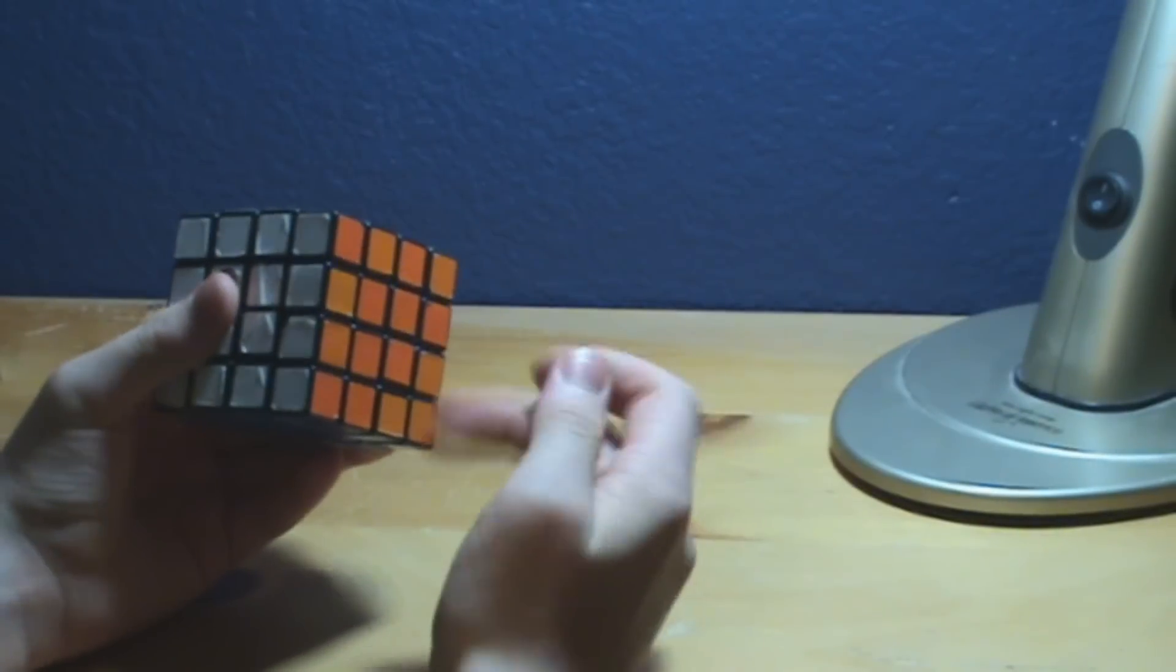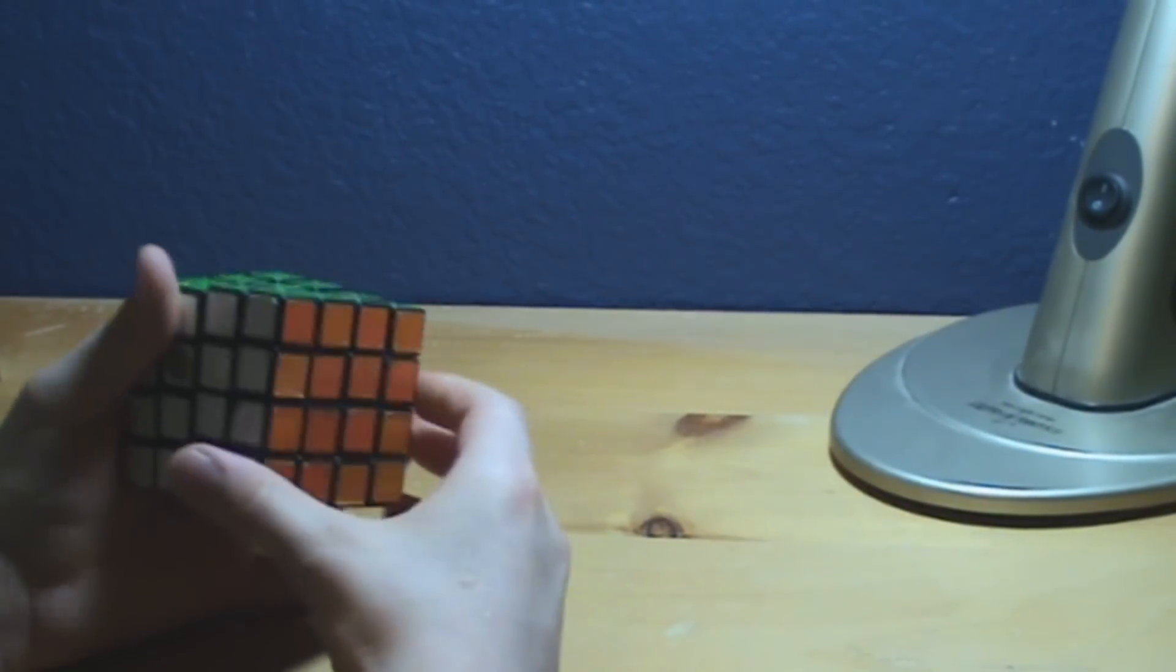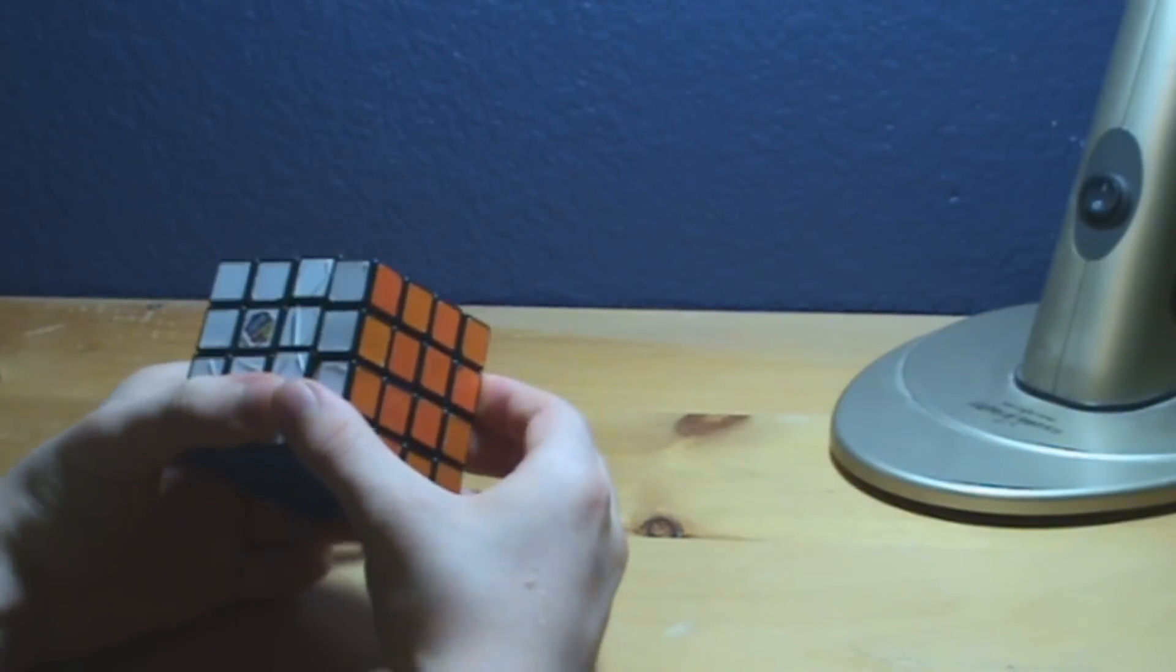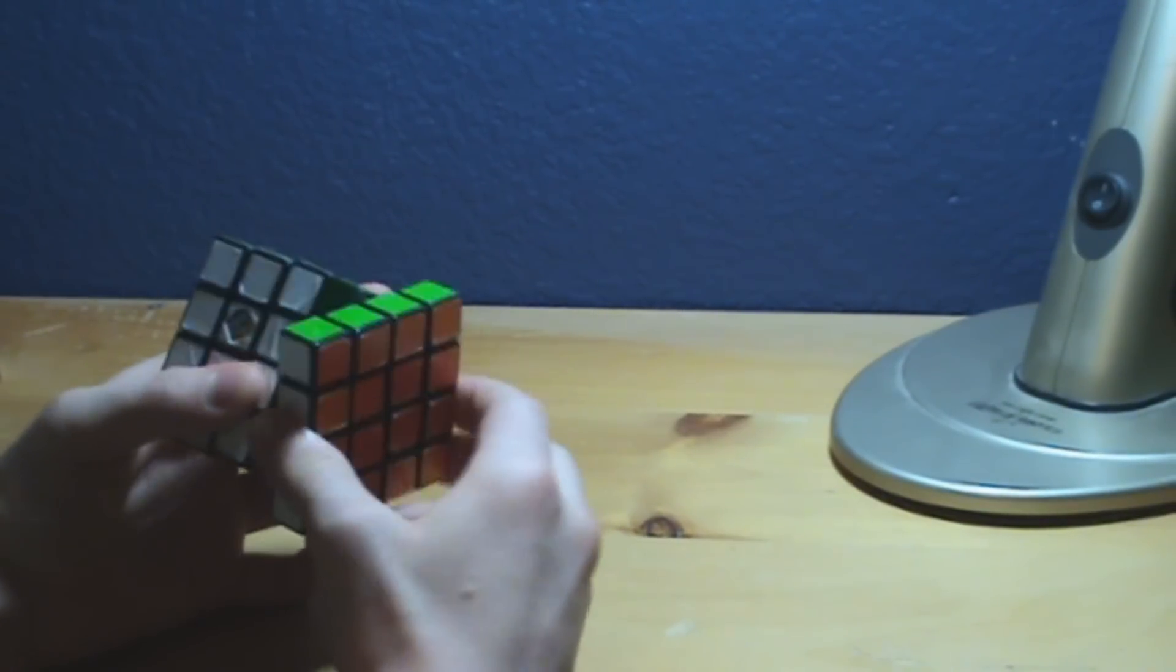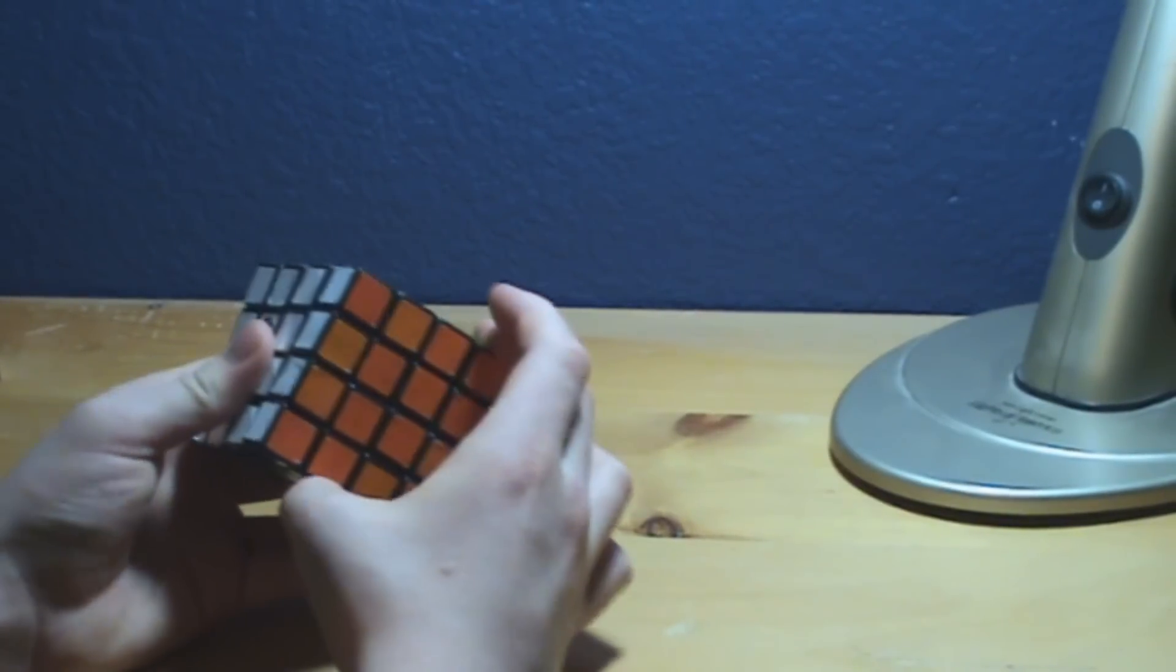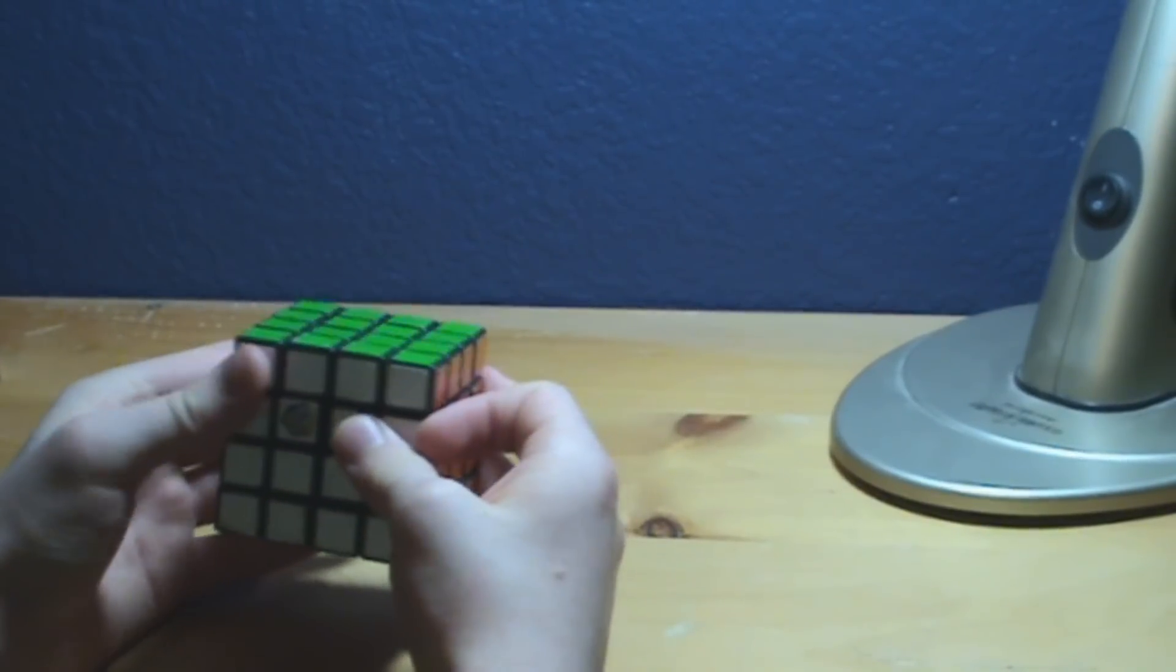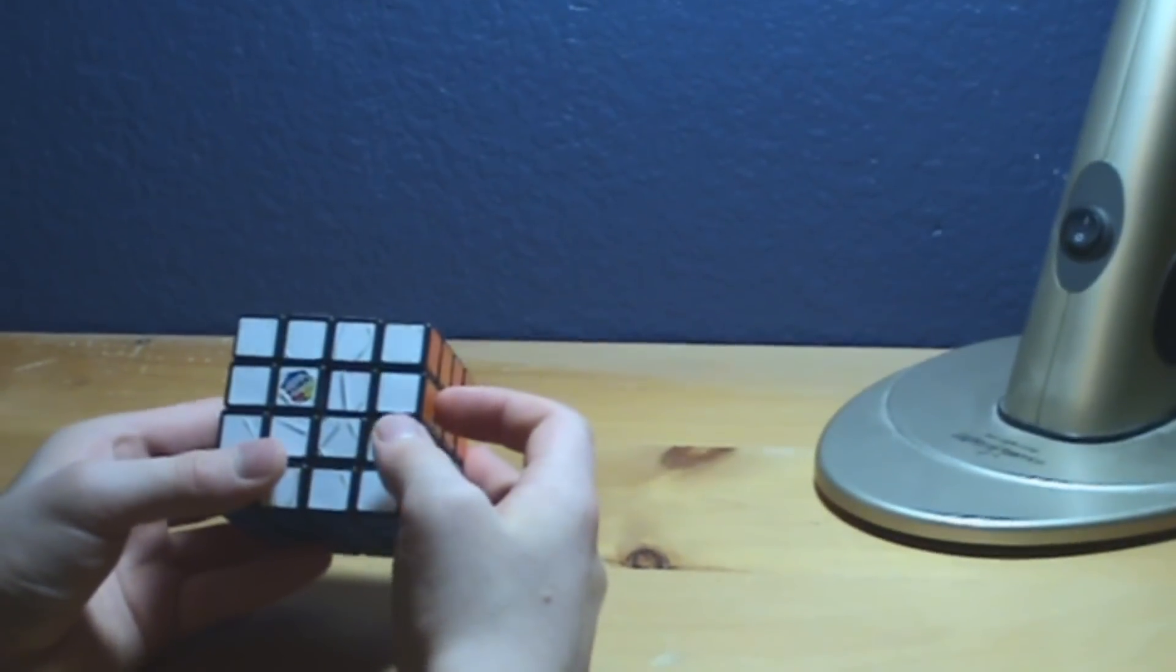If it's R2, that would be right side twice. And if there's a dash, you turn it counter clockwise once. If it's just a regular R one layer, like a U, you just turn the upside once clockwise.